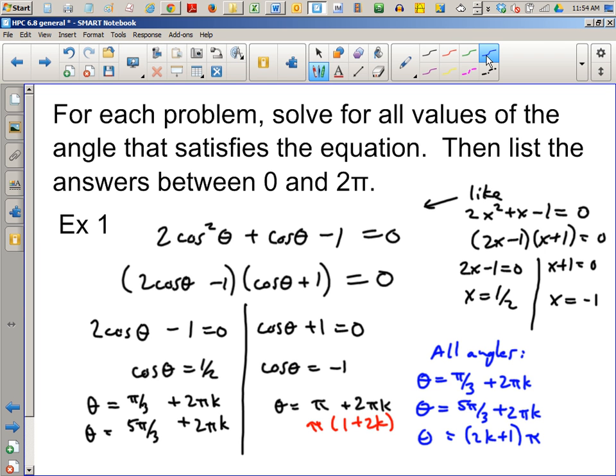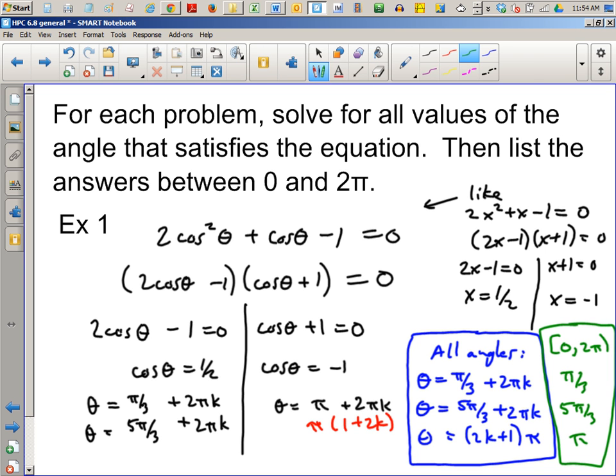Okay, so these are all my angles. If I want angles that are between 0 and 360, that would basically be π over 3, 5π over 3, and π. So we're asked to do both, so we do both. Okay, any questions?